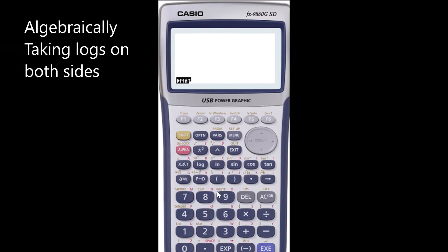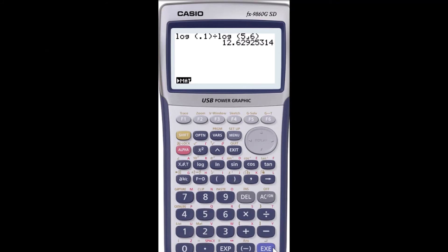So taking logs on both sides you will have log 0.1 divided by log 5/6. You will end up with the same result as you can see here, 12.6.